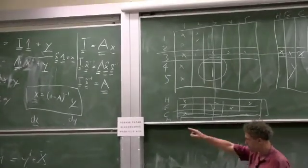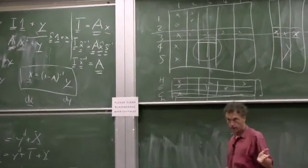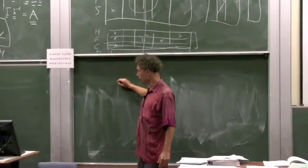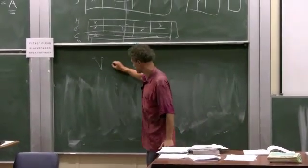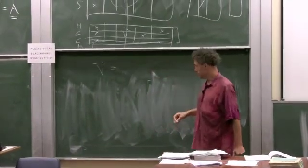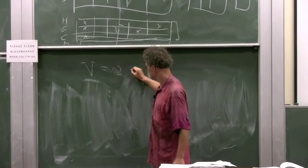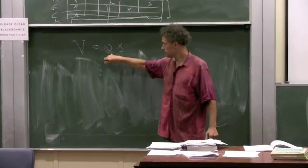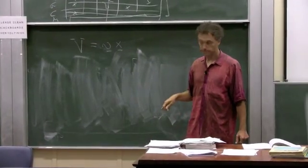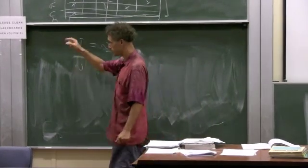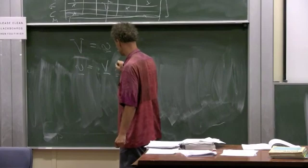And the way we do this is in a similar way as we constructed this direct requirements matrix. Let's say in the overall economy, we have value added v. And let's assume we can write this as a vector v times x. Now you can see here that v is a coefficient. It's a value added per unit of gross output. Or you can turn this around basically like we did with A. You can calculate v equals v vector times x to the minus 1.